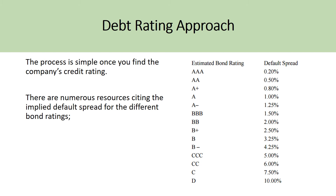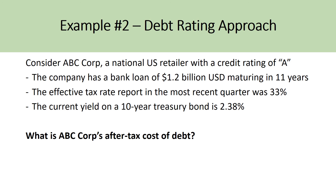To find the default spread, I use the Moody's benchmark. If the company has a AAA credit rating, the default spread is implied to be about 0.2%. If the company has a CCC credit rating, the implied default spread would be about 5%. Once you know the company's credit rating, go to this benchmark — which you can find on Google — take the default spread, add it to the risk-free rate matching the term length of the bond or bank debt, and then multiply by 1 minus the tax rate to get your after-tax cost of debt.